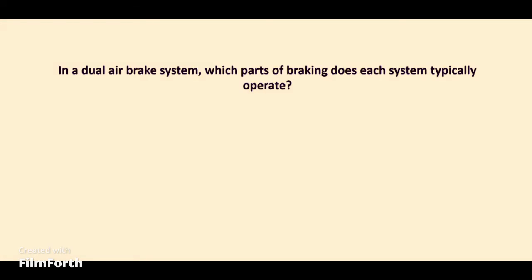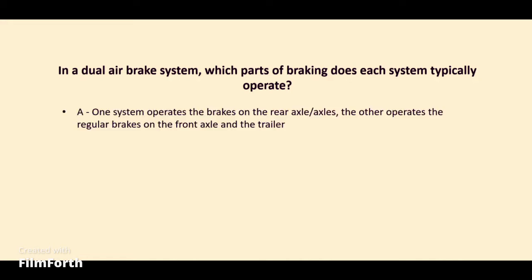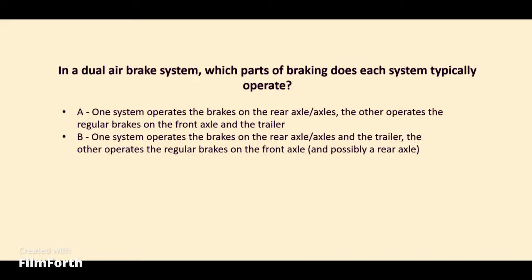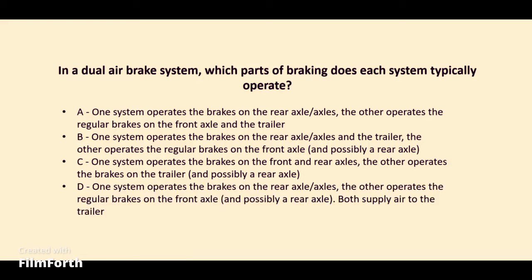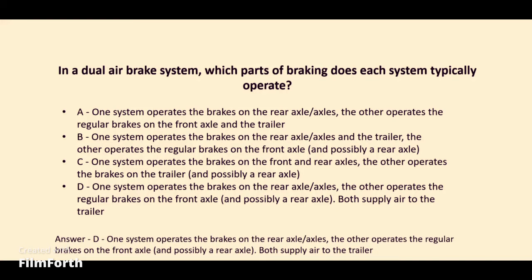In a dual air brake system, which parts of the braking does each system typically operate? A. One system operates the brakes on the rear axle; the other operates the regular brakes on the front axle and trailer. B. One system operates the brakes on the rear axle and trailer; the other operates the regular brakes on the front axle. The answer: One system operates the brakes on the rear axle; the other operates the regular brakes on the front axle. Both supply air to the trailer.